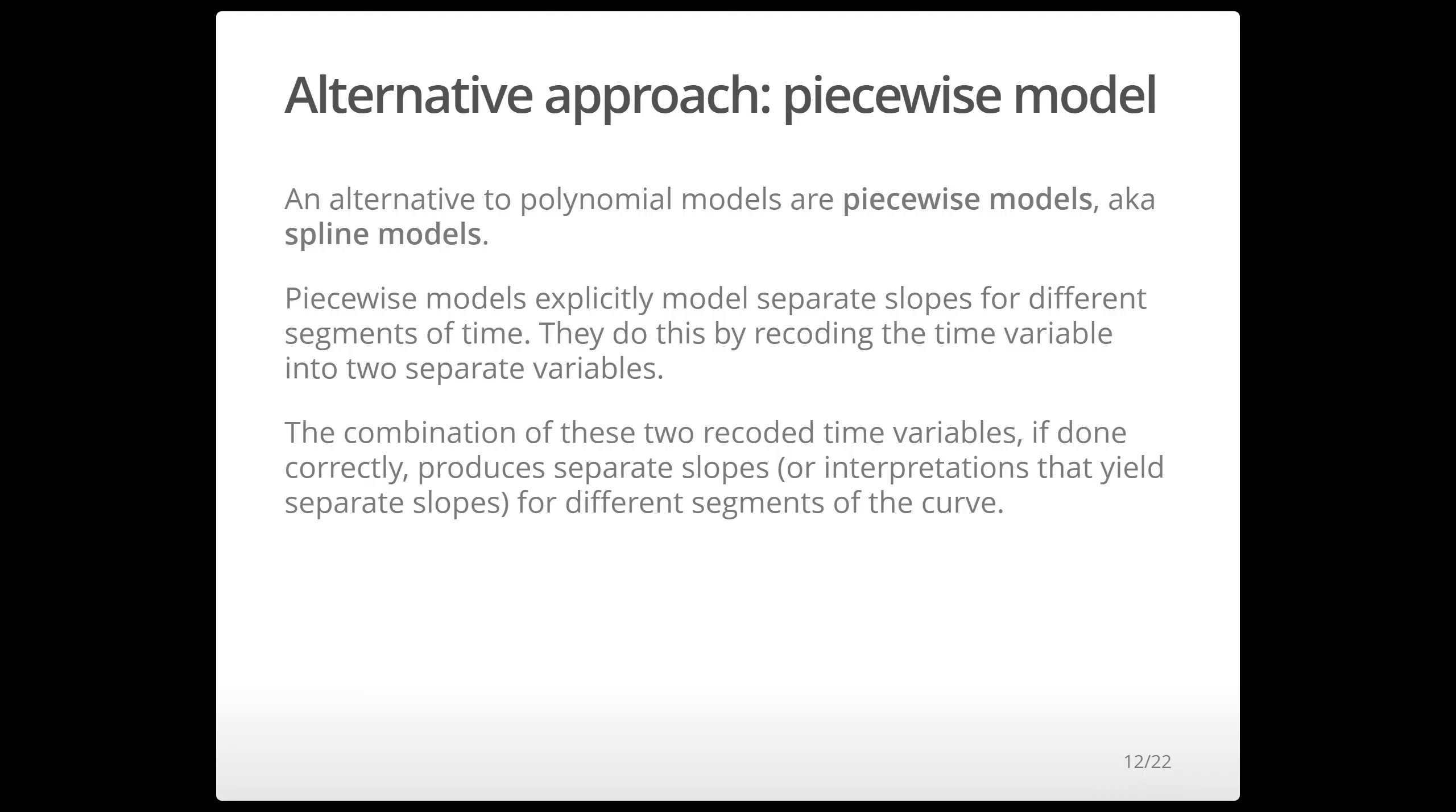So what you're essentially saying is that I think that there's one slope for one segment of the timeline and then one slope for the rest of the line of time. And you can have more than two splines or piecewise sections and that's just what we're going to look at in this example.